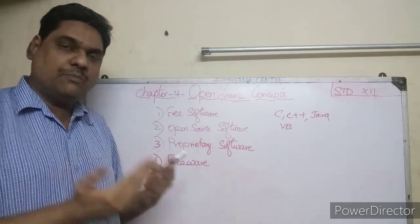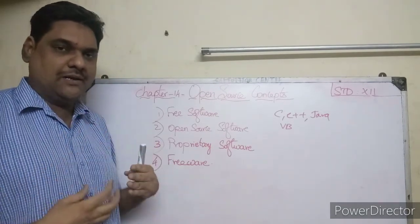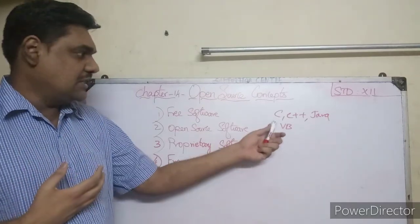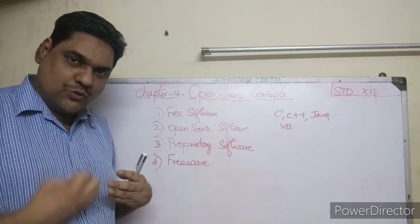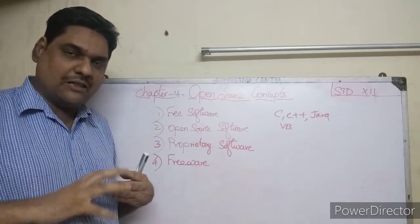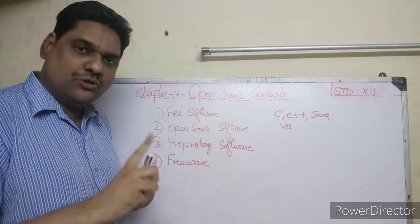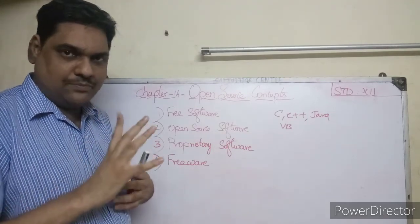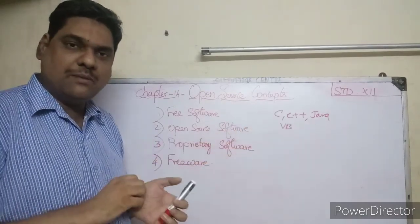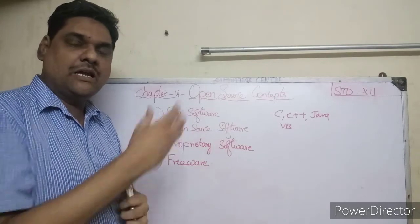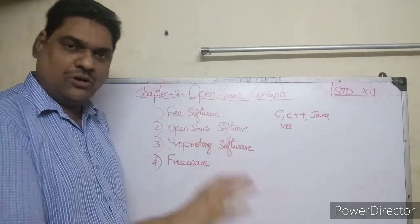These are computer languages used to write programs. But computers cannot directly understand these high-level languages. So the programs written in high-level languages are converted into binary code, and the computer understands that binary code.